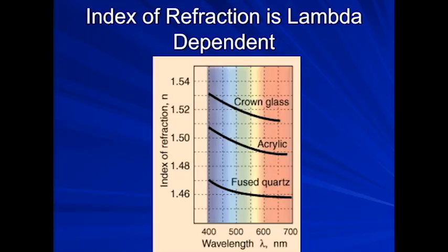They're going to be slowed more or they're going to bend more. In general, for most materials, the bluer, more violet colors will refract more than the red ones will. This can create the spreading of the color spectrum, which is known as dispersion.